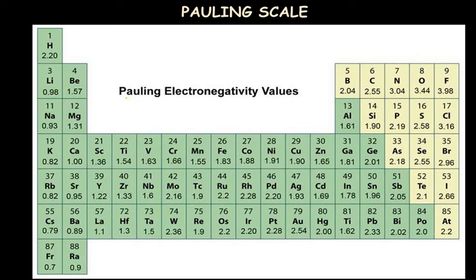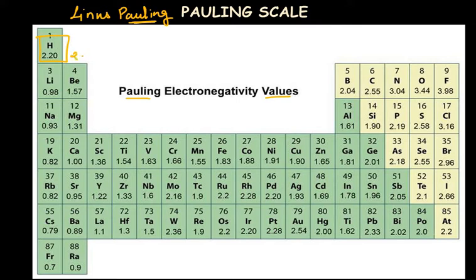Electronegativity is measured on a Pauling scale, a scale given by scientist Linus Pauling, who worked on the electronegativity of different atoms. Since it is difficult to measure the individual electronegativity of different elements, he gave a reference value of 2.2 to hydrogen — sometimes listed as 2.1, which is also acceptable — then compared other elements against hydrogen and gave individual values to each element, building the Pauling scale.